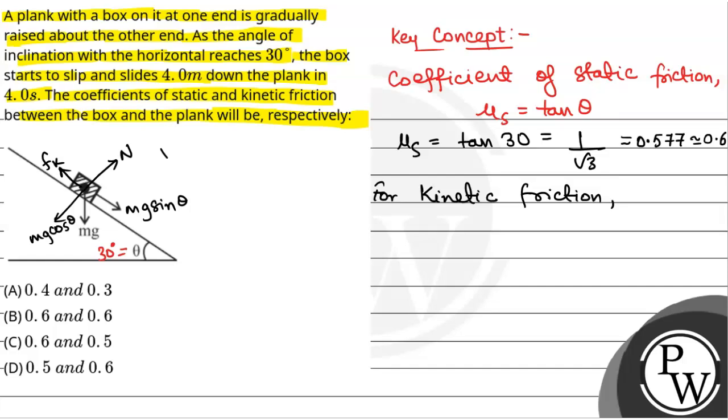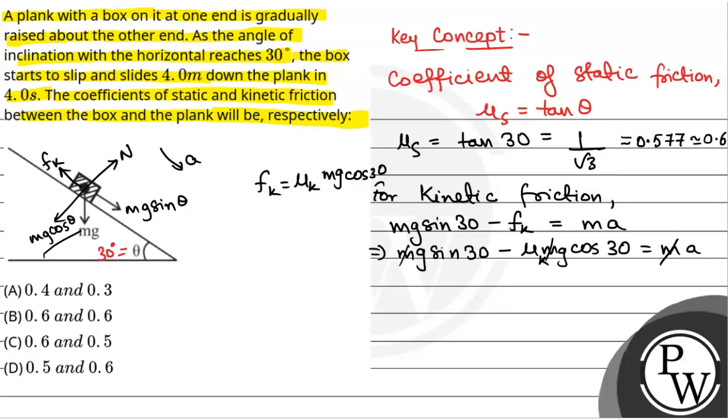We will have acceleration is downward. So we will have Mg sin theta, that is Mg sin 30 minus kinetic friction, that will be M into A. So M will get cancelled.